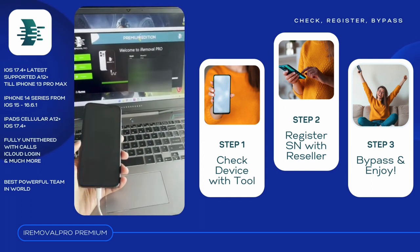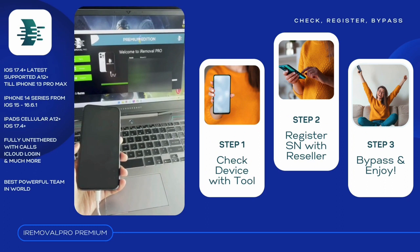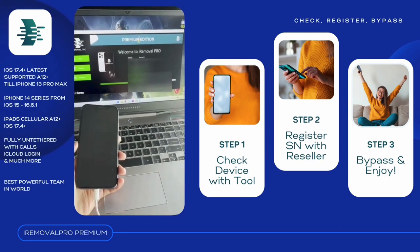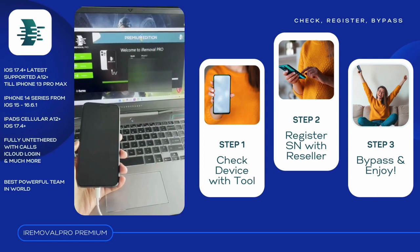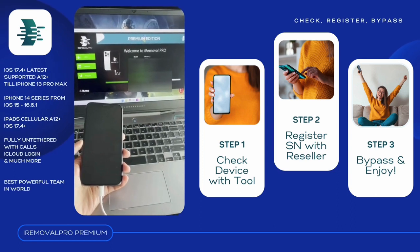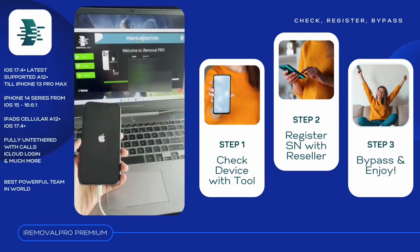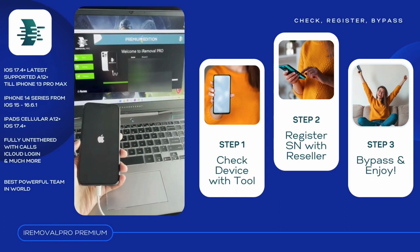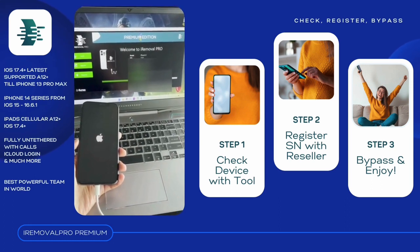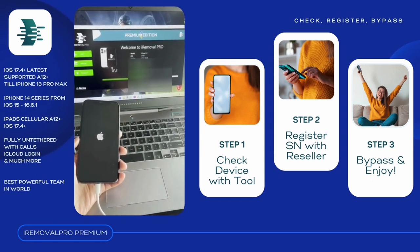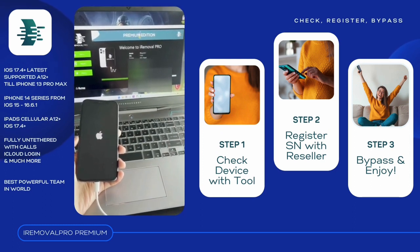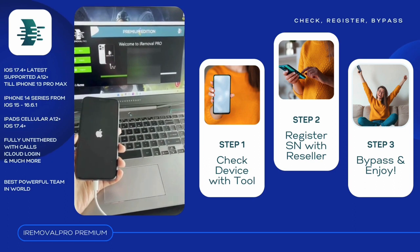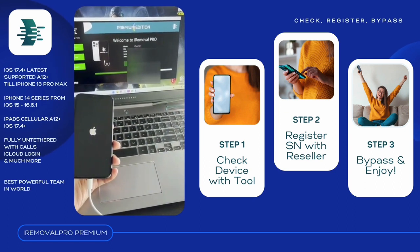For this, I want people to know how they can bypass their device. First of all, you have to check your device whether it is supported or not. After checking it, you can contact your reseller. You can also DM me so that I'll register it for you. But sometimes it can take either 1 to 5 days or 2 to 3 days before you can activate your device. Don't worry, I'll send you a notification prompting you that you need to activate your device.